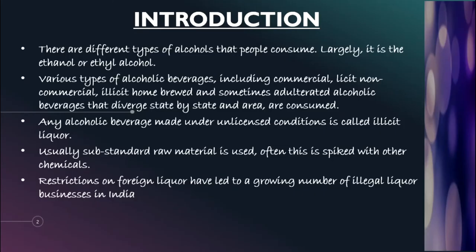First, introduction. There are different types of alcohol that people consume, and mostly it is ethanol or ethyl alcohol, because ethyl alcohol is safe for consumption. This is the most common type of alcohol consumed by people. Now depending on that, there are various types of alcoholic beverages that are made. These can be commercial, they can be illicit non-commercial, or they can be home brewed, or sometimes they can also be adulterated.